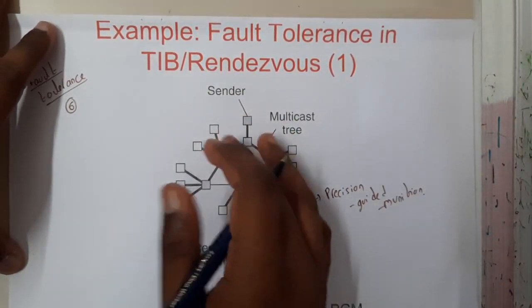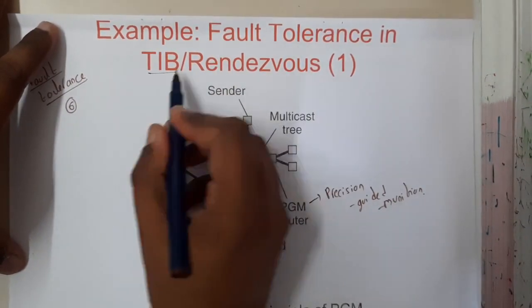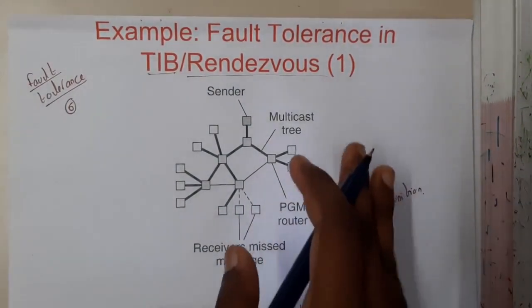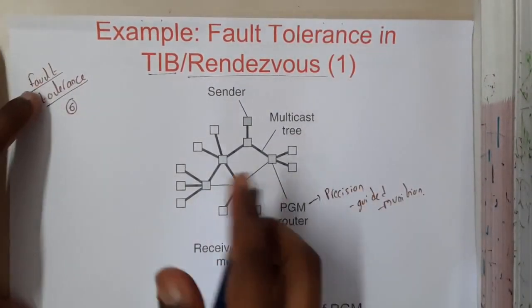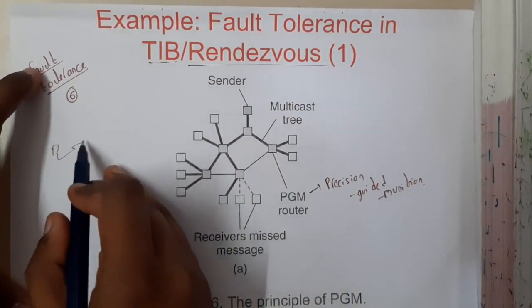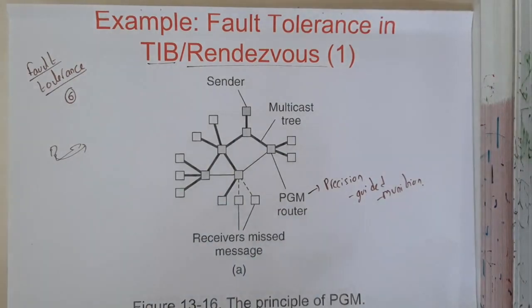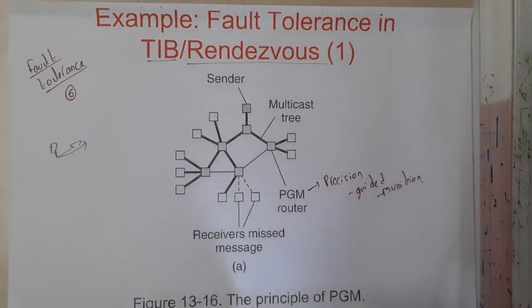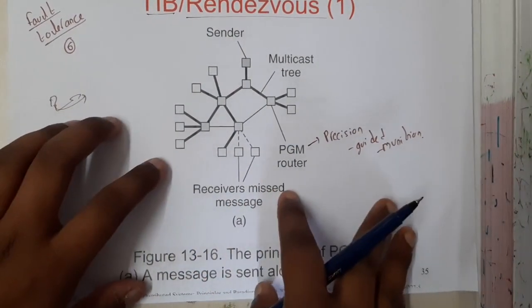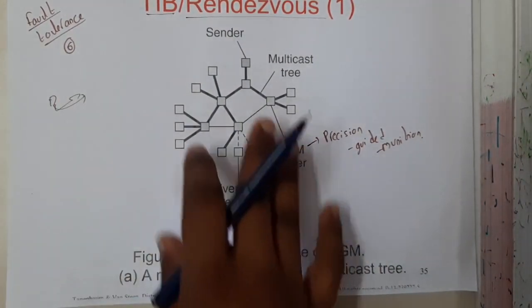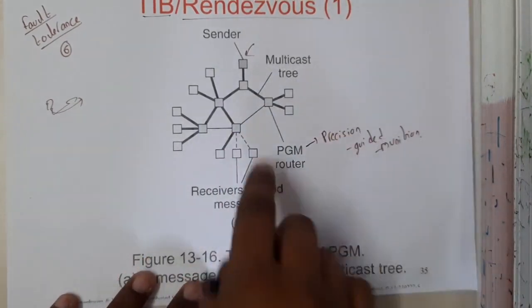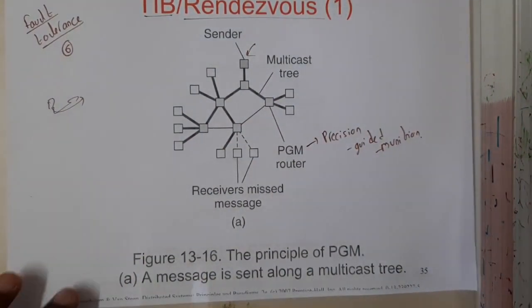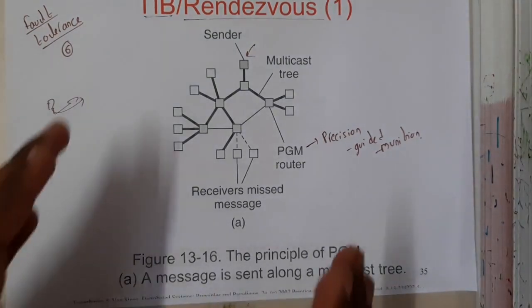Here we are directly taking an example. We discussed about TIB — that is nothing but Renzo's system — where data is sent to a particular subscriber. If you draw that in the form of a tree, the tree will be looking like this. Here is our original sender, and the message is traveling to everyone, slowly spreading across the tree.